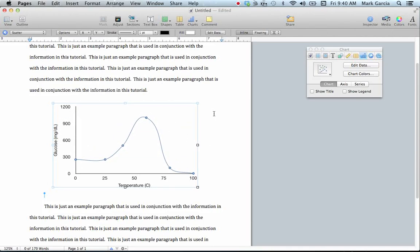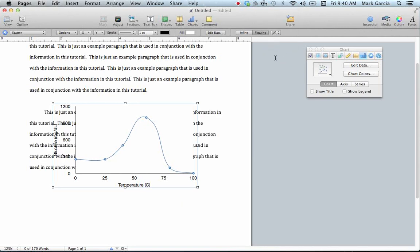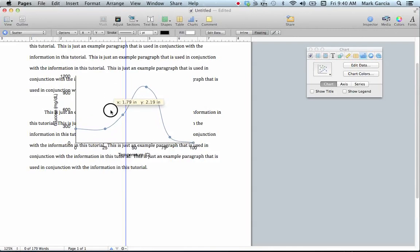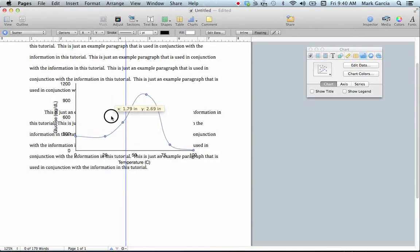So the first thing I'm going to do is change the floating nature of this graph from inline to floating. I'm going to click Floating, and then I'm going to click on this tab here and choose None. Now that's going to cause my text to go behind the graph, but that's fine because I can now drag the graph wherever I want to in the document.